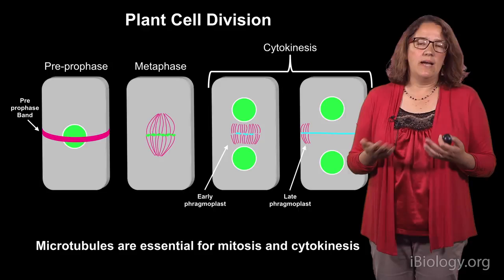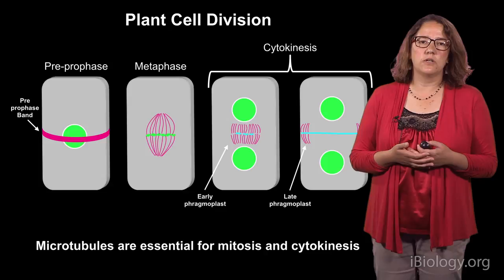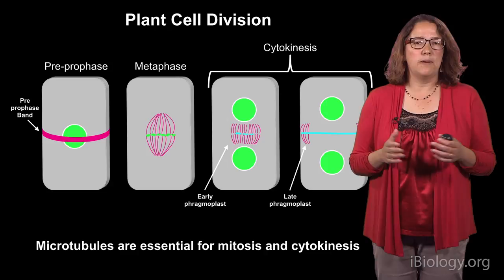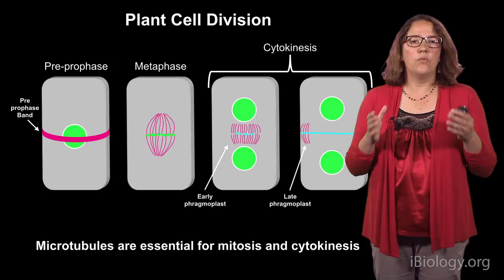First I need to tell you a little bit about how plant cells divide. They divide using the cytoskeleton, and their division is slightly different from animal cells. In many plant cells there's a microtubule structure called the preprophase band, which is a structure of microtubules right underneath the plasma membrane. What that does is it essentially marks the cell cortex and says this is where the new cell division plane should arrive. That's the preprophase band.